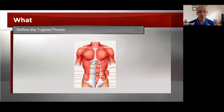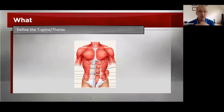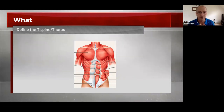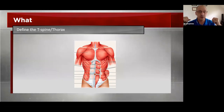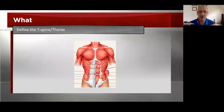When we talk about the thorax and the T-Spine, we start including so many other areas. We're talking about how the breathing musculature works with this T-Spine and thoracic area, how the abdominal musculature connects in here, and how the shoulders via the SC joints and the scapulothoracic articulations float and work on this thoracic area.